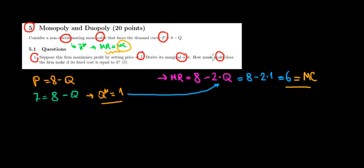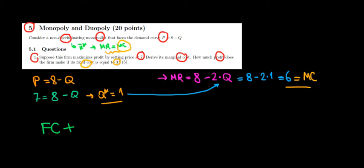The second question is: how much profit does the firm make if the fixed cost equals 3? Assuming a fixed cost and a marginal cost, we can treat the marginal cost the same as the variable cost per unit. The fixed cost is the fixed investment, and additionally we have a cost per unit — that additional cost is the marginal cost, in other words the variable cost per unit. So we have a variable cost of 6 per unit, meaning 6 times the quantity.